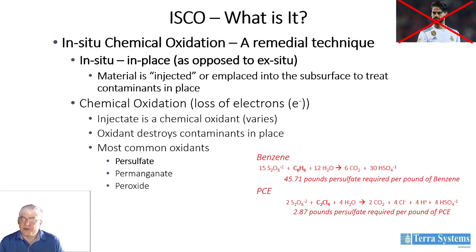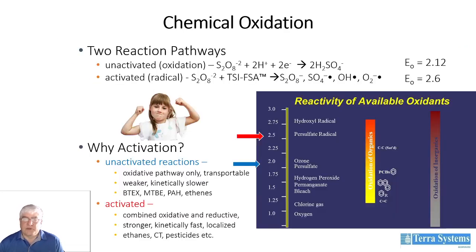We've shown down at the bottom benzene and PCE. For persulfates, you can calculate the amount of persulfate required on a mass basis by balancing the redox chemical equations. You can do that calculation knowing the mass that's present in the subsurface. If we look secondly at what are the oxidants that we can apply to a site, there's a range of oxidants ranging from oxygen all the way up through the radical species. The question becomes: why do we have radical species and why are they necessary?